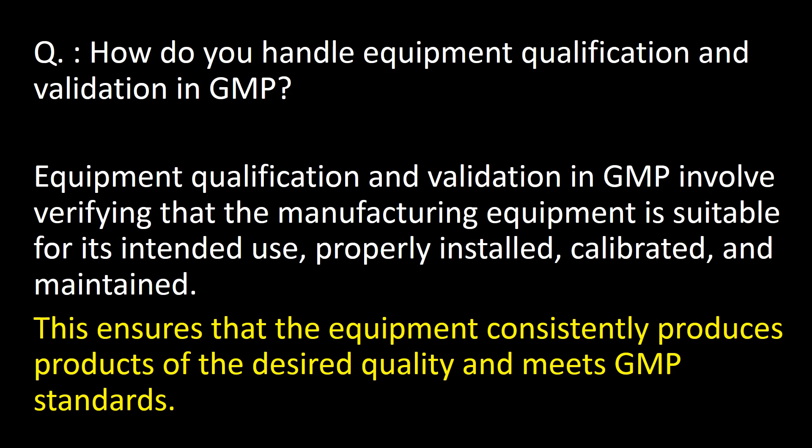How do you handle equipment qualification and validation in GMP? Equipment qualification and validation in GMP involves verifying that the manufacturing equipment is suitable for its intended use, properly installed, calibrated, and maintained. This ensures that the equipment consistently produces products of the desired quality and meets GMP standards.